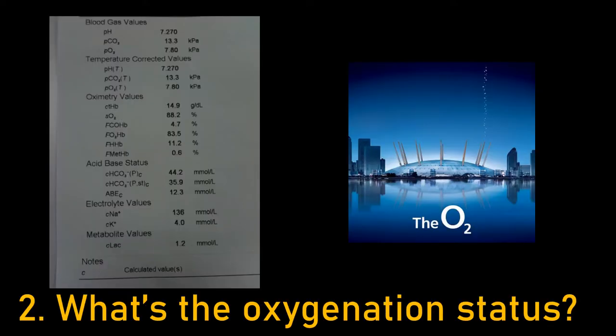What's the oxygenation status? Remember, with the breathless patient, hypoxia kills fast, so check this first. Normal partial pressures of oxygen in the blood are between 10-14 kilopascals. Our patient here has hypoxia.